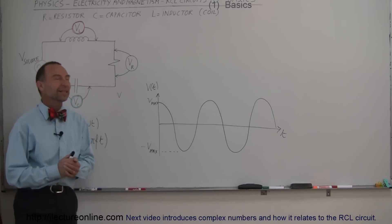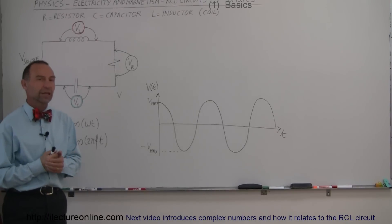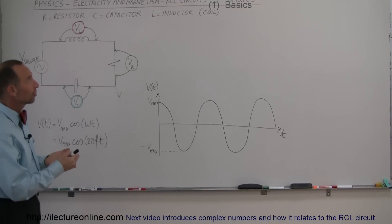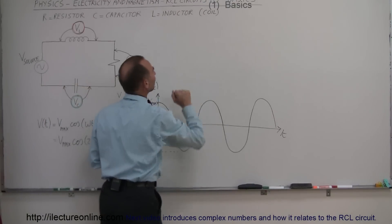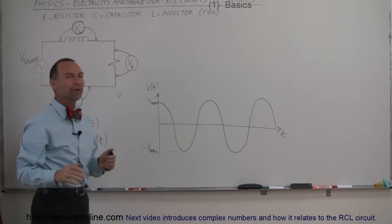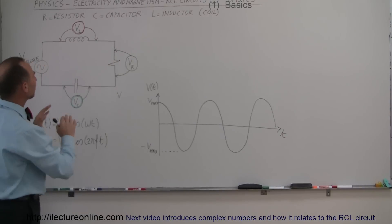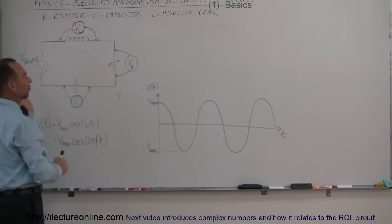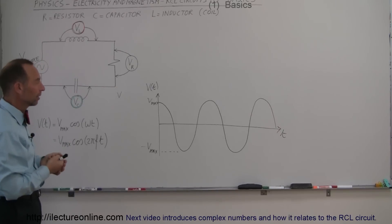Welcome to ElectronLine. We're going to do a new series on RCL circuits. RCL stands for resistors, capacitors, and inductors — L stands for inductors, and another word for inductor is a coil. These are three very basic components in a circuit, and usually they interact with the voltage source when the voltage source is a time-varying source like an AC voltage source.